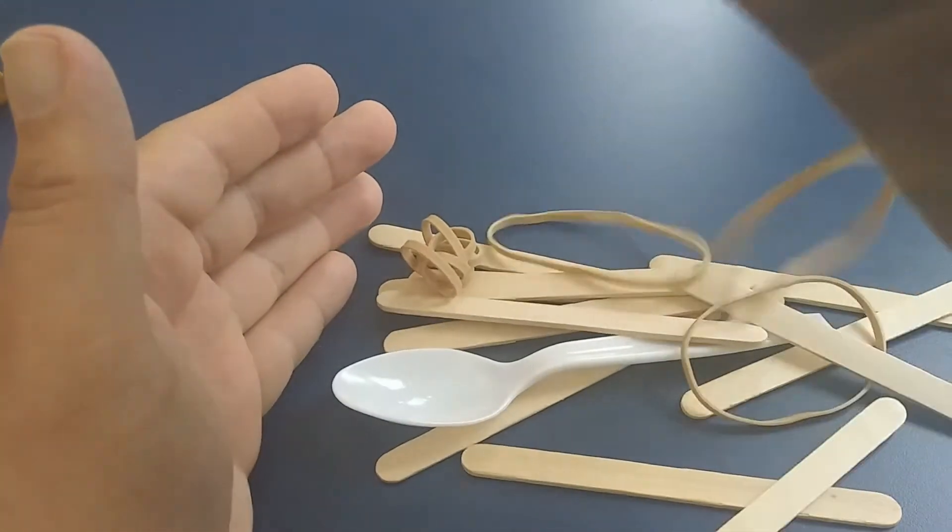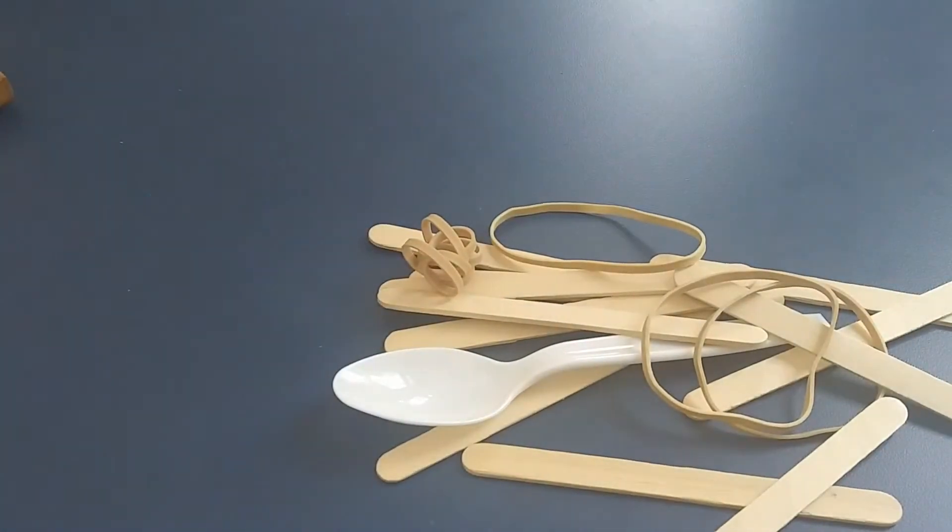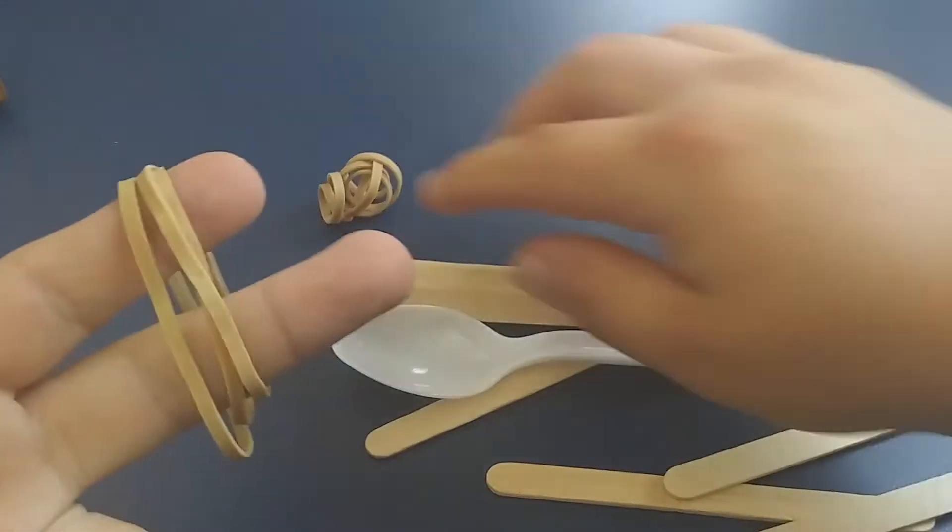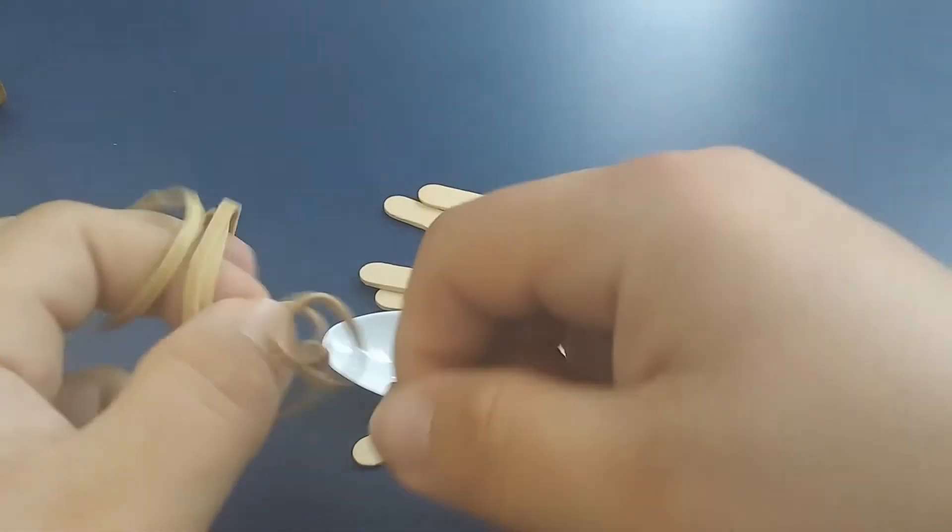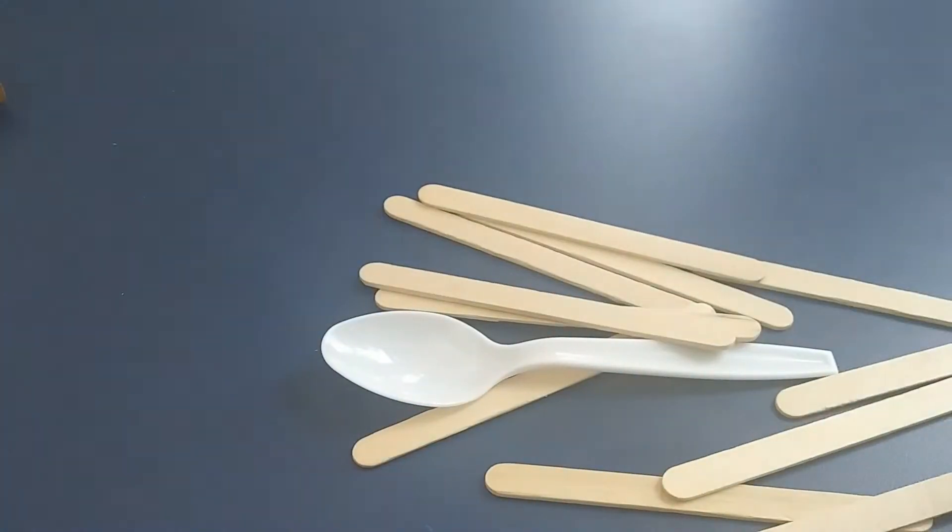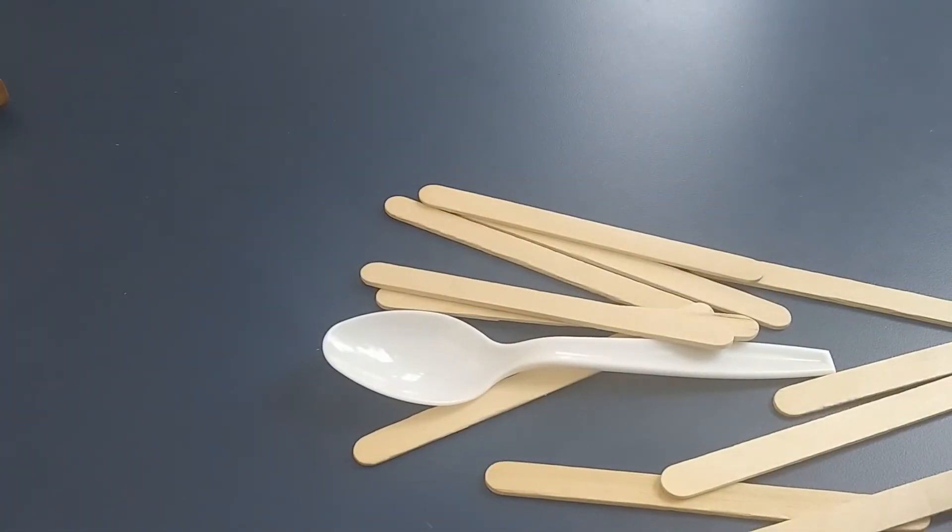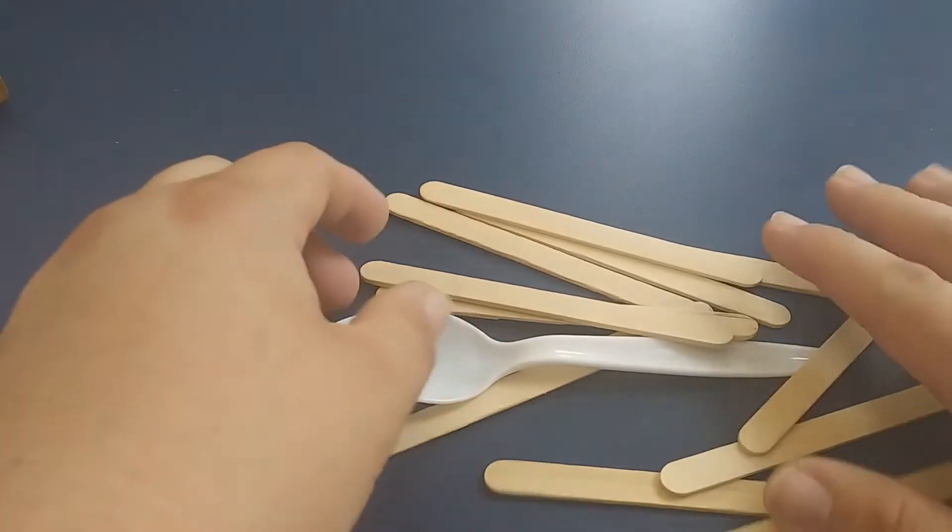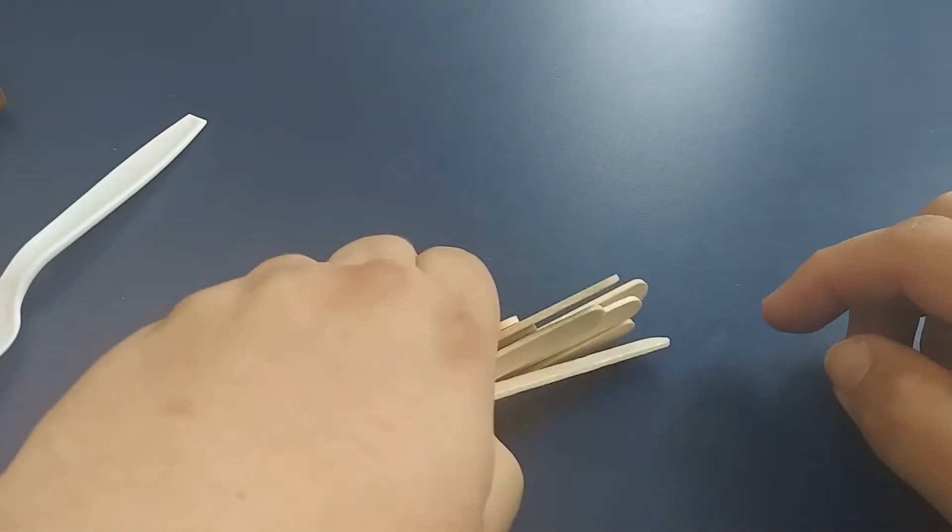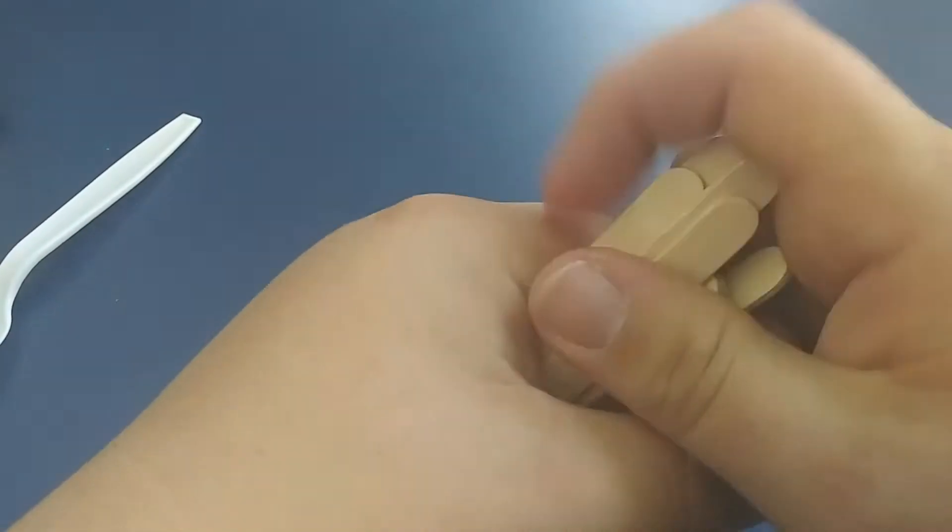In your kit you should have three different types of items. First, five rubber bands. We're only going to need three of these, but I provided two extra to make sure that if for whatever reason yours decides to snap or break, you have an extra.